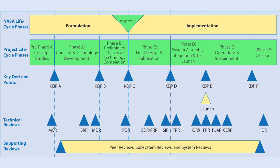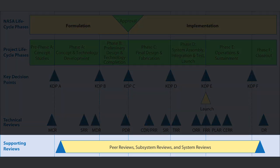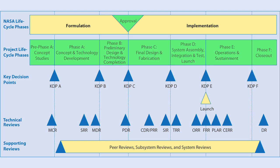The primary technical review in Phase C is the Critical Design Review, and there's also a System Integration Review. The Critical Design Review — similar to the Preliminary Design Review in Phase B — will be preceded by a series of lower-level component and subsystem reviews looking at design maturity in Phase C. That series of peer reviews and subsystem reviews will all lead up to a major system review called the System Critical Design Review.